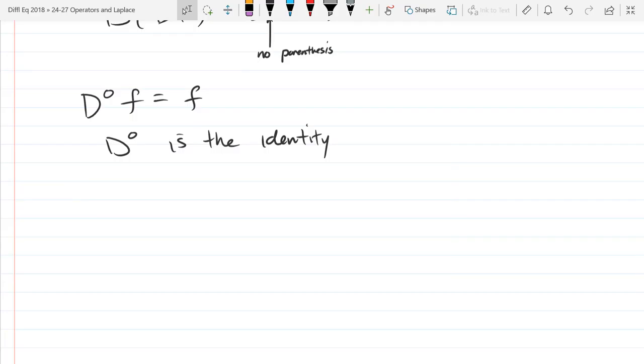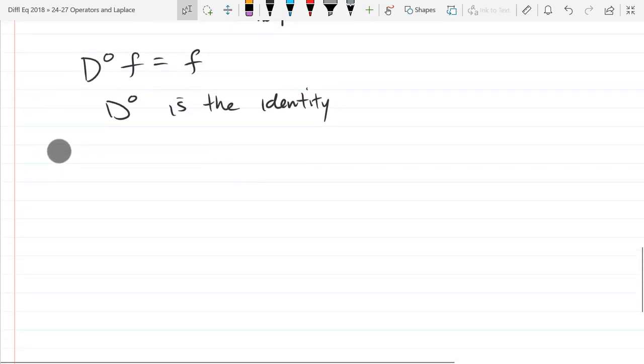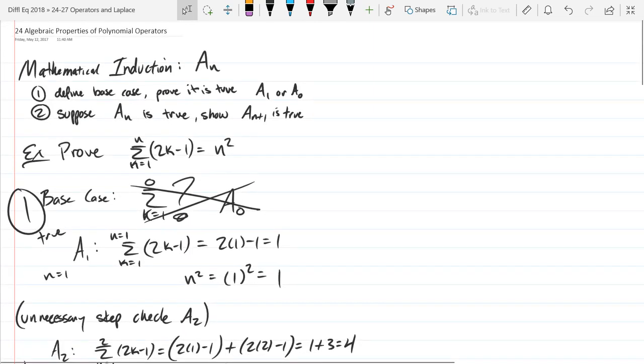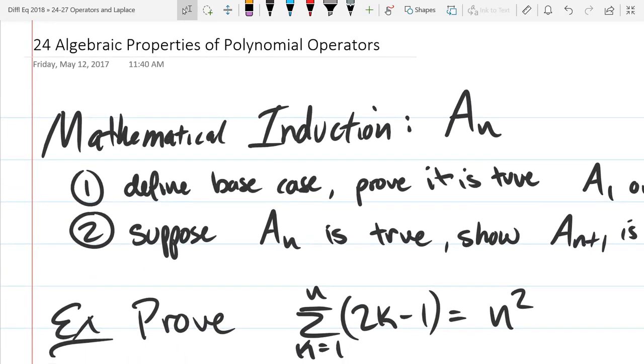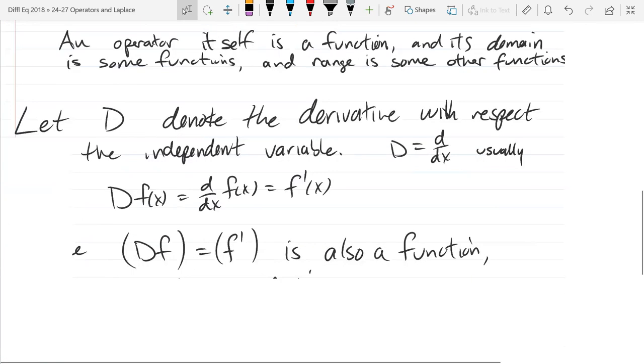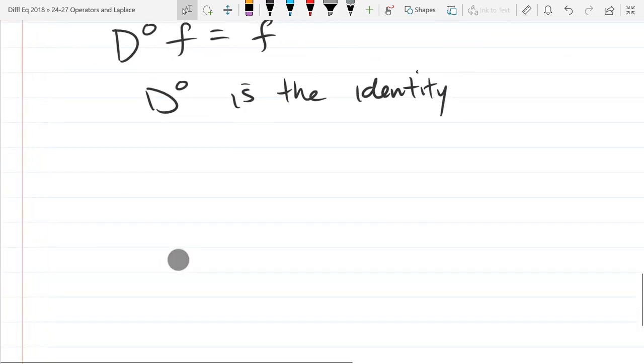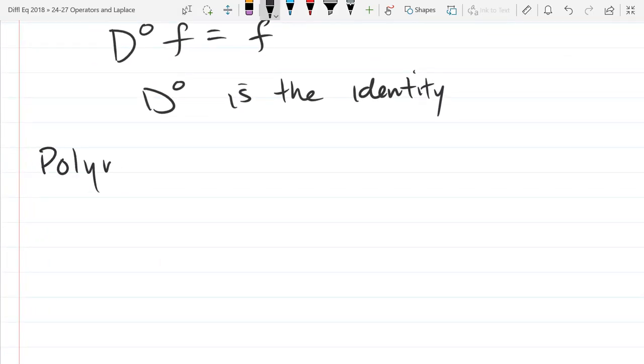D^0 means take no derivatives. That takes care of the word operator. Now, what about polynomial operator? We're going to look at that word next. You know what polynomials are. What we're going to have is a polynomial in D, not in x. We know polynomials in x, we're just going to have a polynomial in D now.